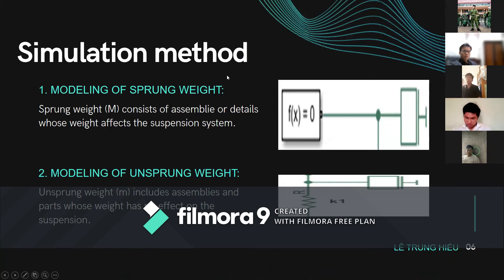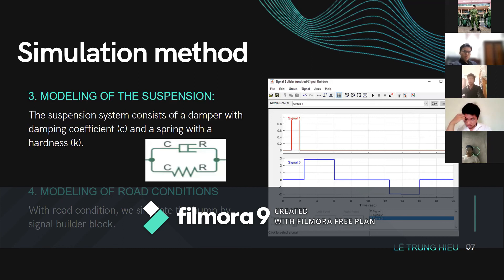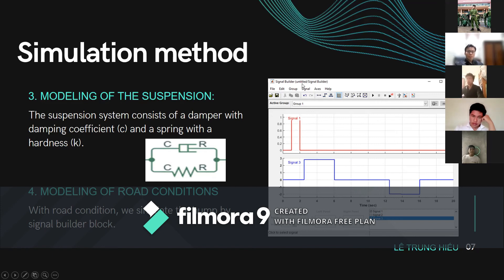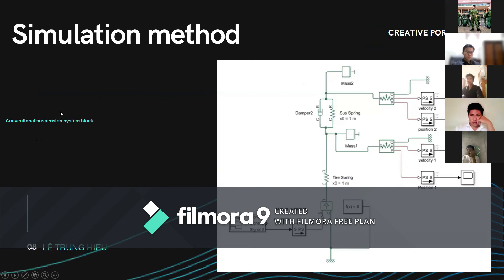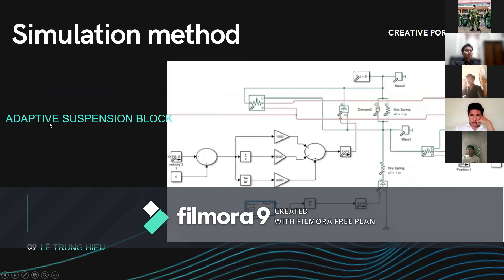Modeling of the road: the road can be set up to represent a surface that affects the suspension system. There is also modeling of the uneven road with local assemblies where the road has no effect on the suspension. The suspension system model consists of a damper with damping coefficient c and a spring with stiffness k. Road conditions are simulated using a signal builder block with two situations: signal one and signal two.